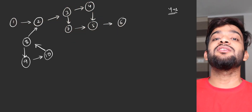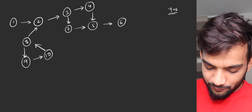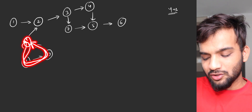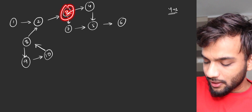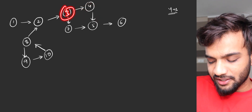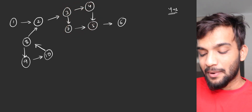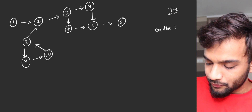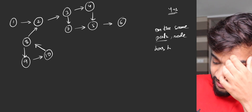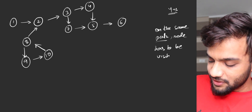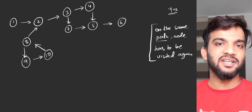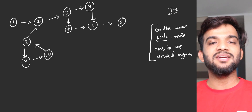The key insight: in a directed graph, on the same path the node has to be visited again for it to be a cycle. If you start from a node, go along a path, and come back to the same node on that same path — that is a cycle. On a different path, it does not count. On the same path, the node has to be visited again.